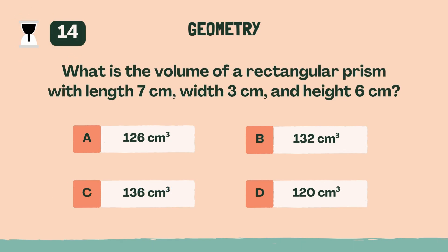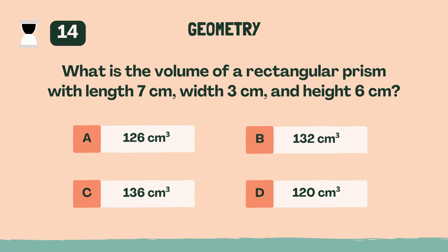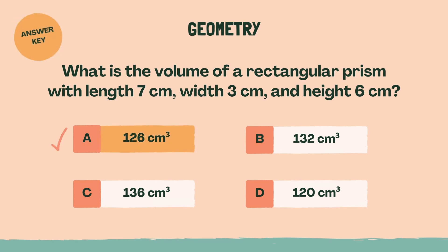What is the volume of a rectangular prism with length 7 centimeters, width 3 centimeters, and height 6 centimeters? A, 126 cubic centimeters.